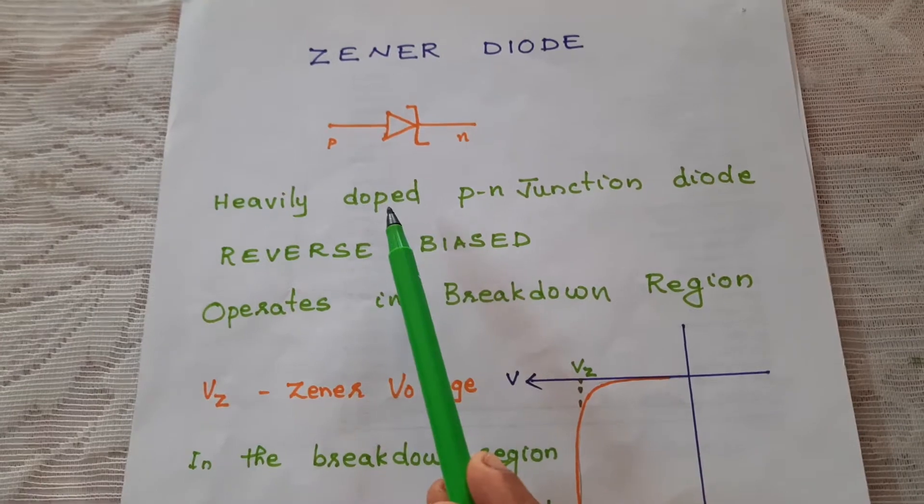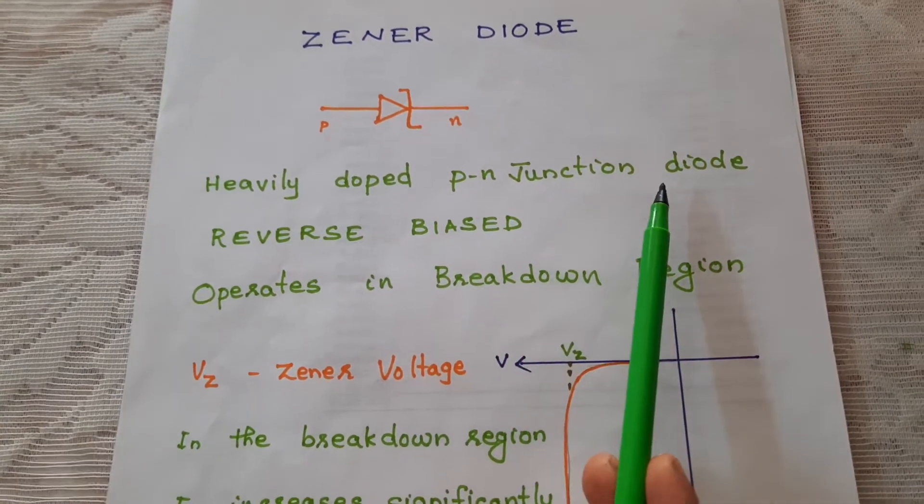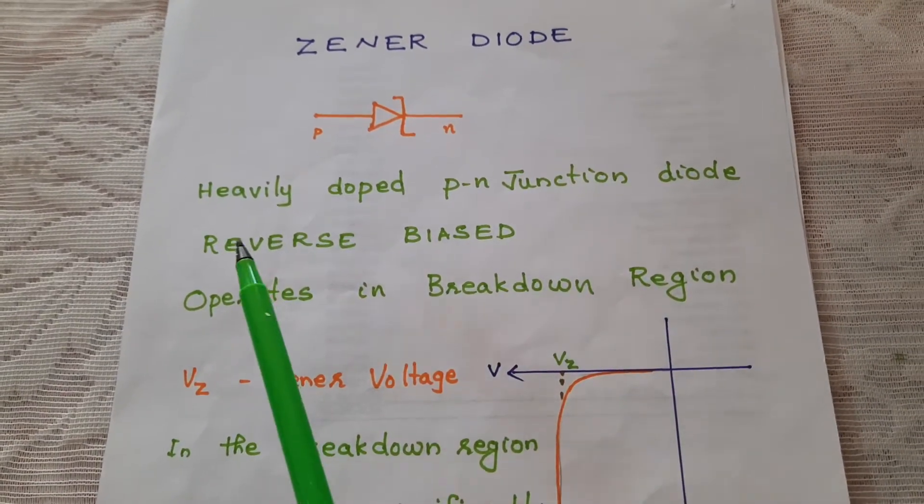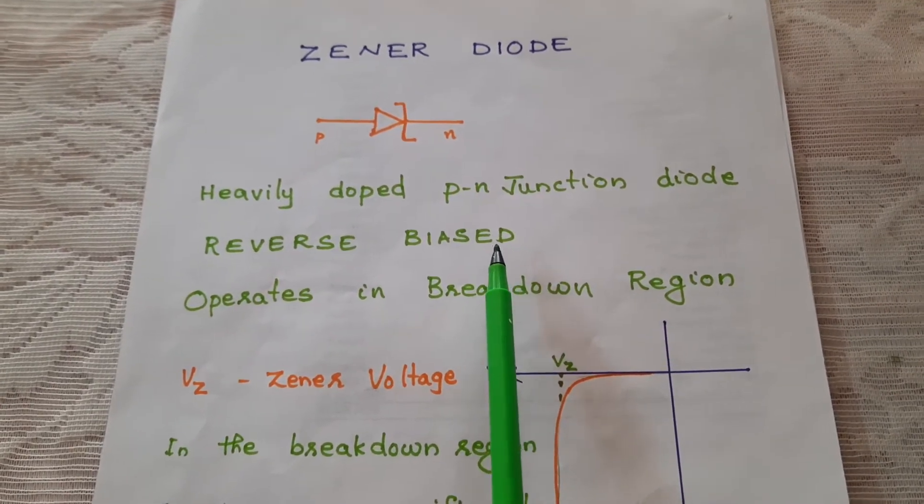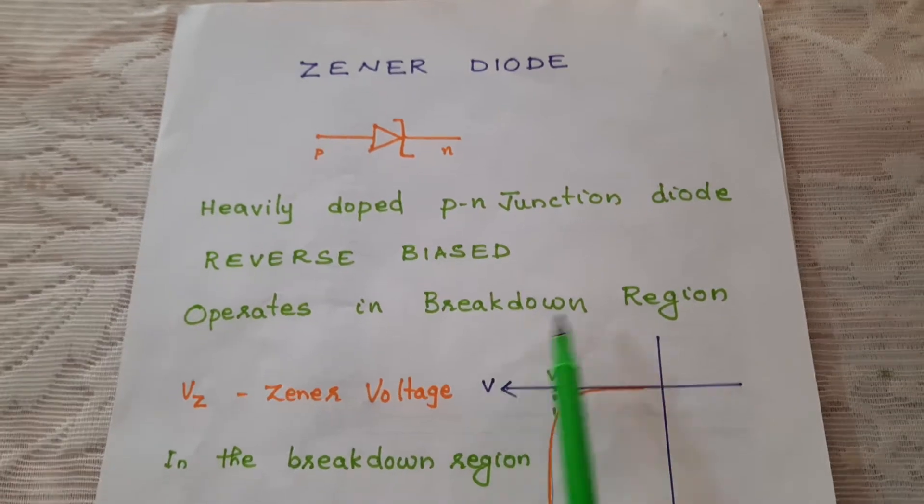Zener diode is a heavily doped PN junction diode. It is designed to operate in reverse bias in the breakdown region.